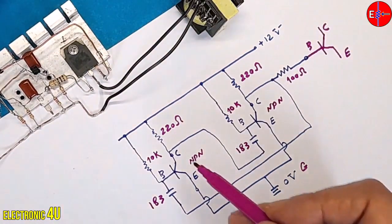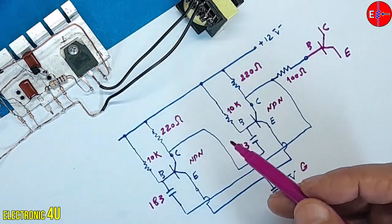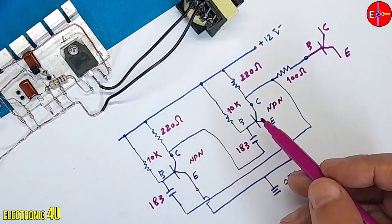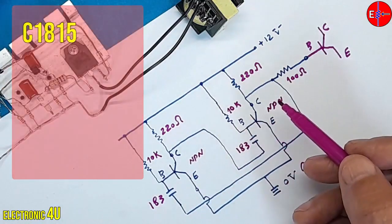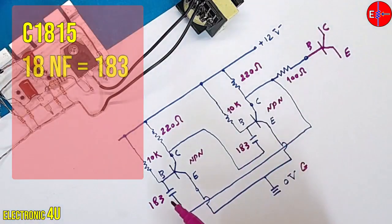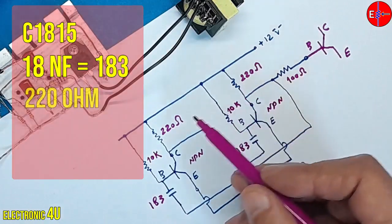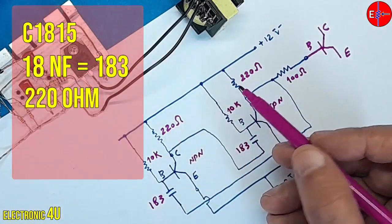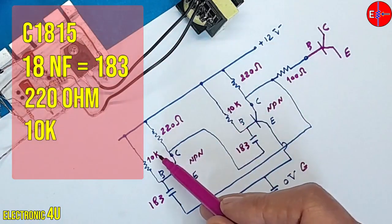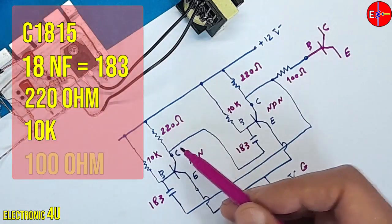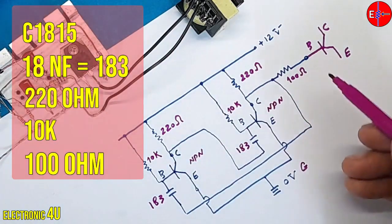A 100 ohm resistor is implemented to reduce the current and connected to the base of the switching transistor. The completed oscillator circuit comprises these two transistors labeled C1815, two 18 nanofarad capacitors, two 220 ohm resistors, two 10 kilo ohm resistors, and a 100 kilo ohm resistor.